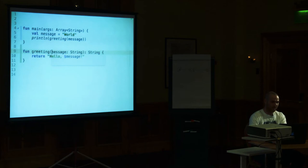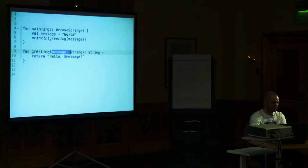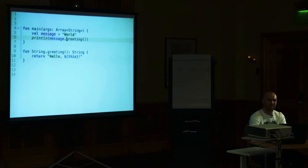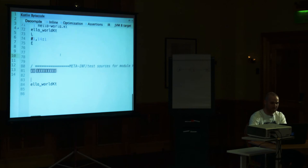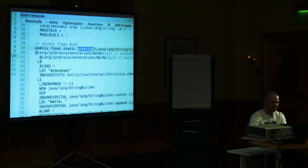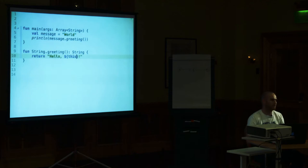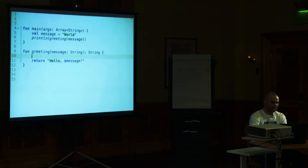Another feature which came from C# in Kotlin is extension functions. Here I can convert a parameter to a receiver. What happens is that the first parameter which goes into the function — we basically pretend that there is a function on `String` called `greeting`. So the syntax becomes `message.greeting()`. Inside the function we can refer to `this`, which will be the first argument. At runtime, as you might guess, it becomes just a static function.